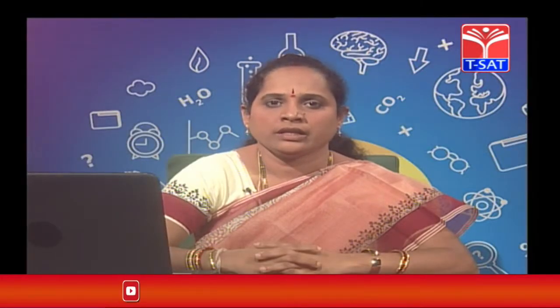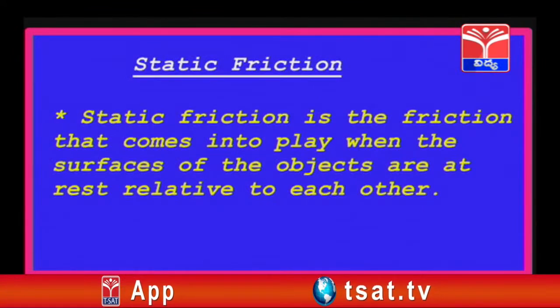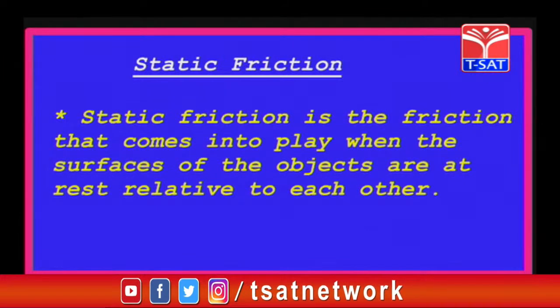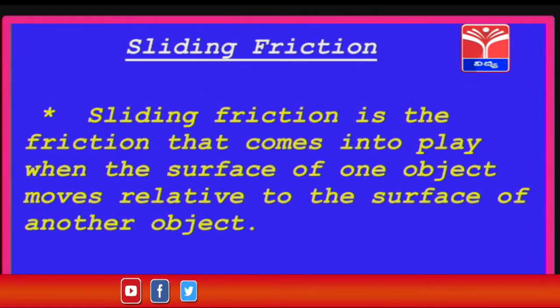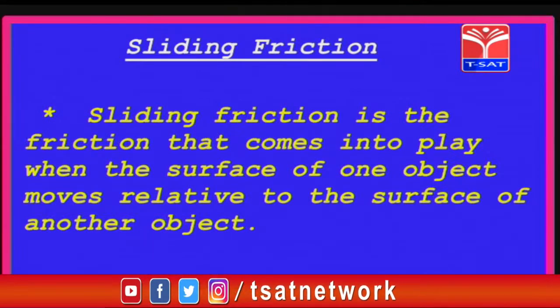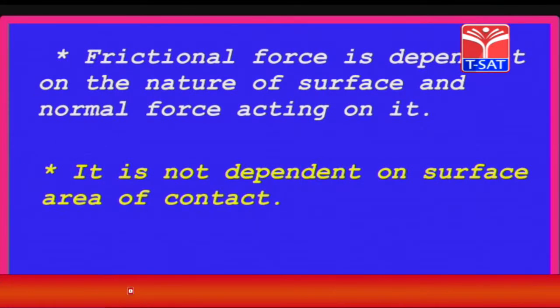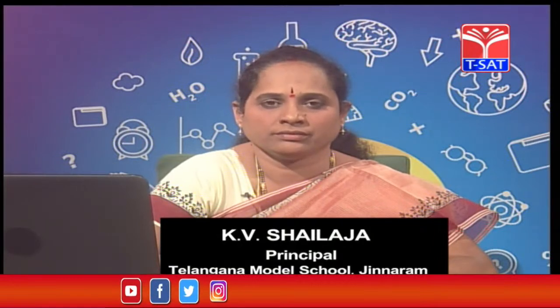The frictional force depends on the normal force and the nature of the surface in contact. Let us summarize the two types of frictional force. The first one is static friction, which comes into play when the surfaces of two objects are in contact with each other. The second type is sliding friction, which comes into play when the surface of one object moves relative to the surface of another object. In this session, we have learnt about types of friction and the factors affecting friction. In the next session, we will learn more about friction. Thank you.